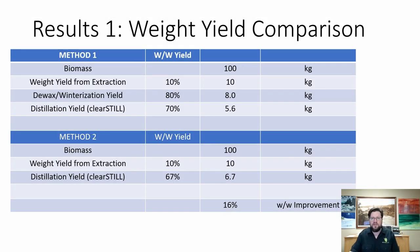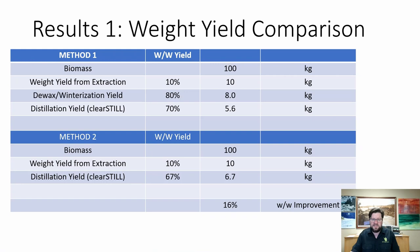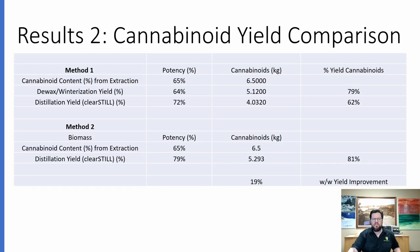Here are the results from the weight yield of the extract. We have 100 kilograms biomass in. The weight yield from extraction was 10%, giving approximately 10 kilograms out. The weight percent yield for the de-waxing process was 80% — we did this many times with only a couple percent plus or minus variation, and usually it was minus. Distillation yield was right around 70%. For Method 2, with the same material, we also had a 10% weight yield from extraction — 10 kilos — and then a distillation yield of right around 67% to 70%, giving about 6.7 kilos out. When you compare 6.7 kilos to 5.6 kilos, we have a 16% improvement in the weight-to-weight yield.